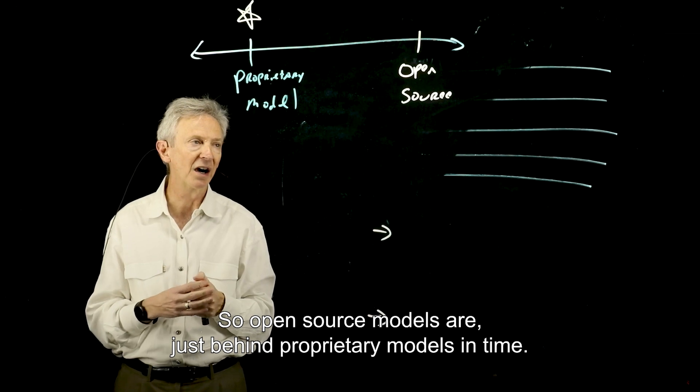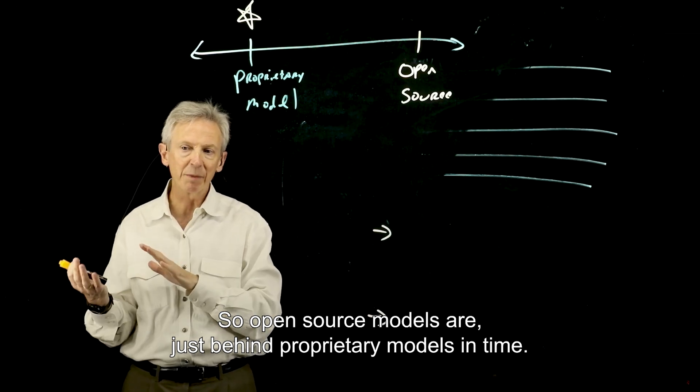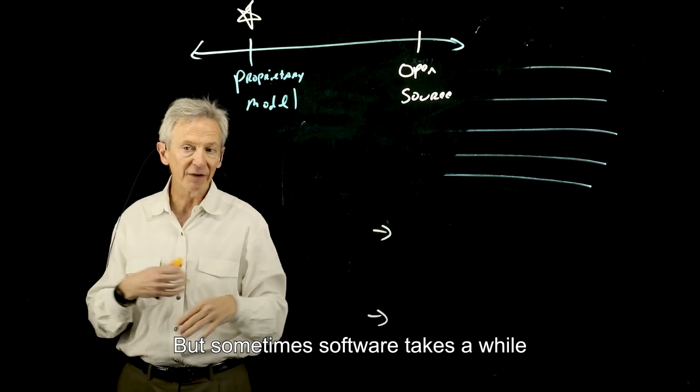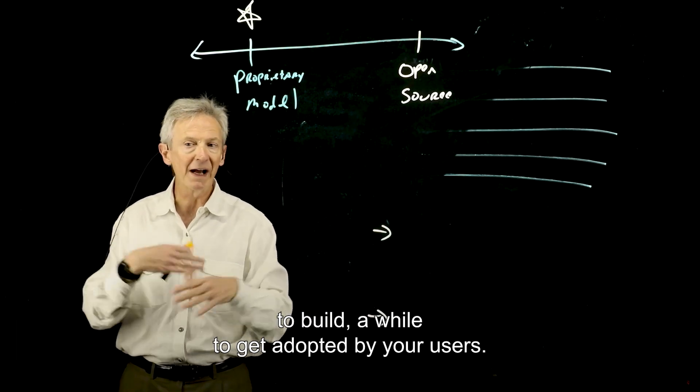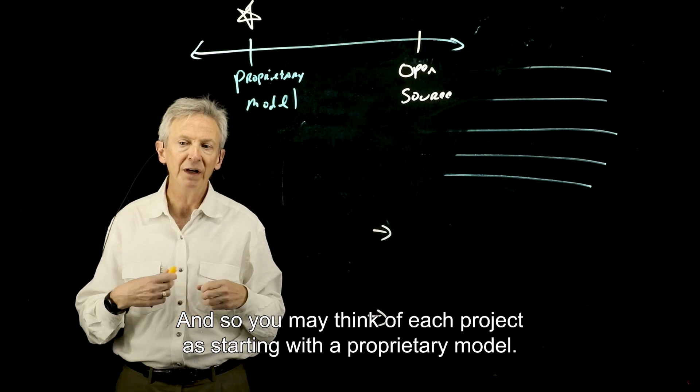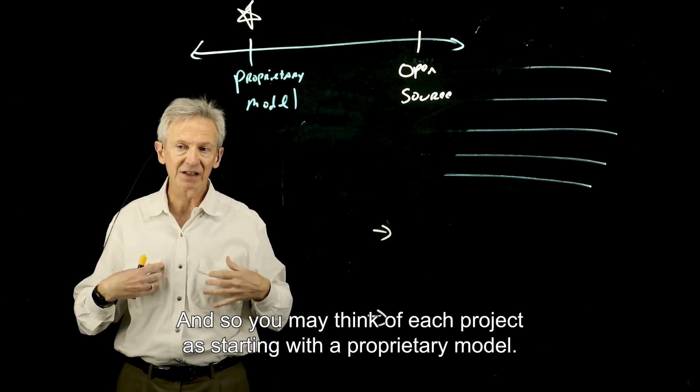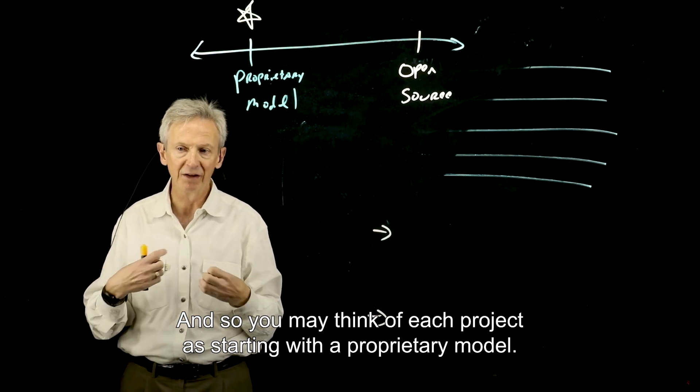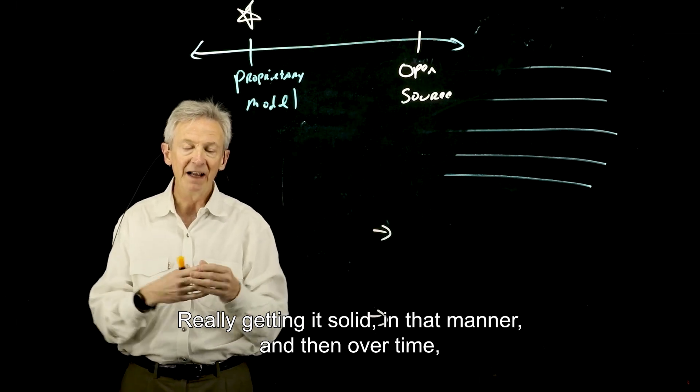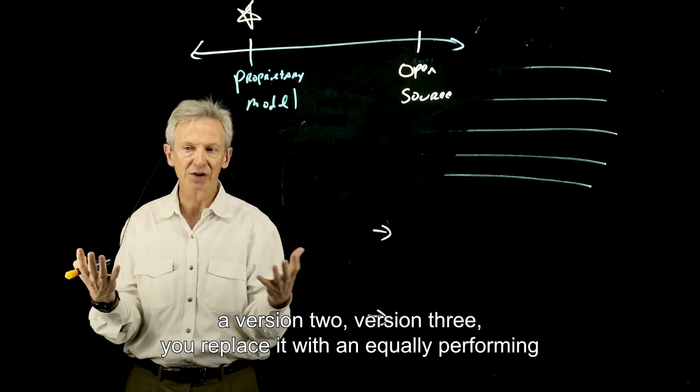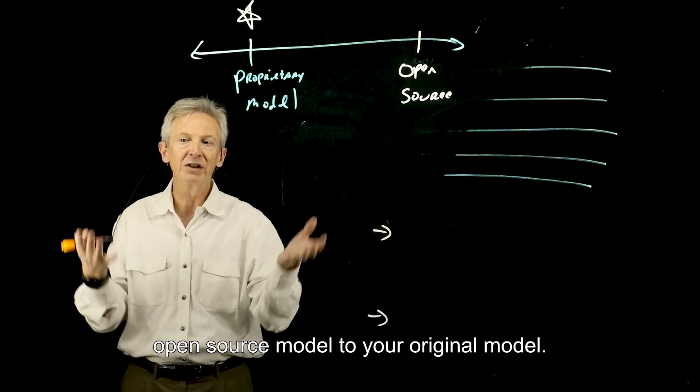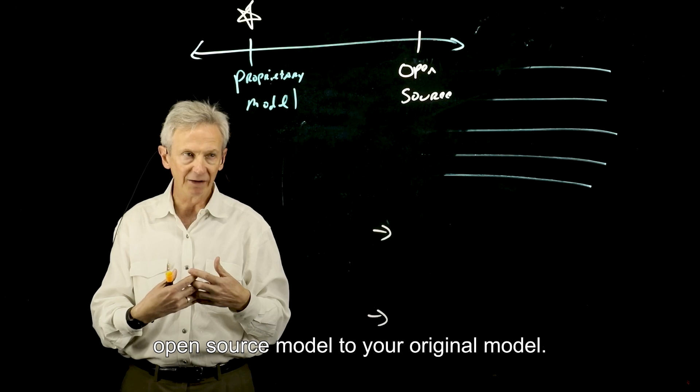So open source models are just behind proprietary models in time. But sometimes software takes a while to build, a while to get adopted by your users. And so you may think of each project as starting with a proprietary model, really getting it solid in that manner. And then over time, a version two, version three, you replace it with an equally performing open source model to your original model.